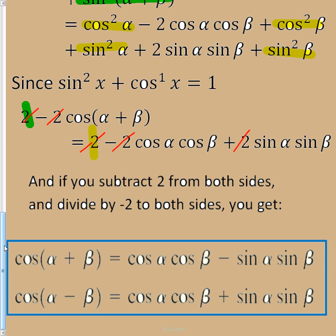And similarly, if I did the cosine of alpha minus beta, I'm going to get cosine alpha cosine beta plus sine alpha sine beta. Thank you for watching.